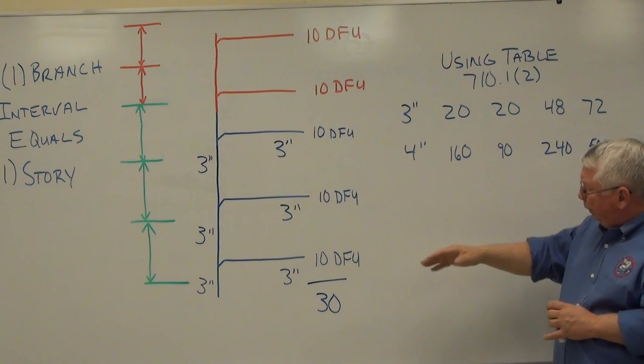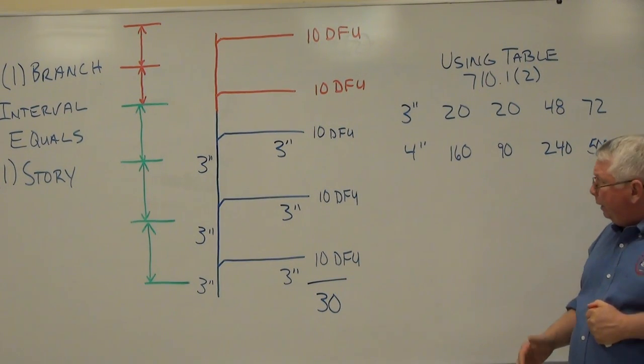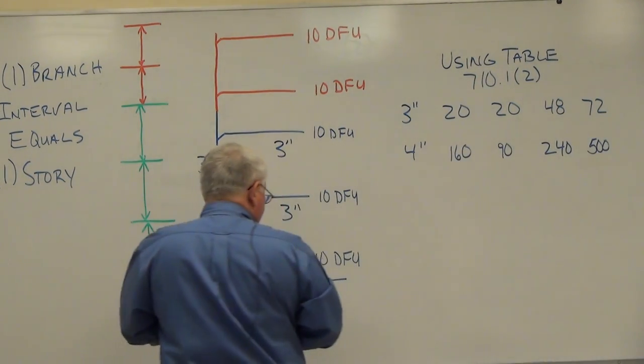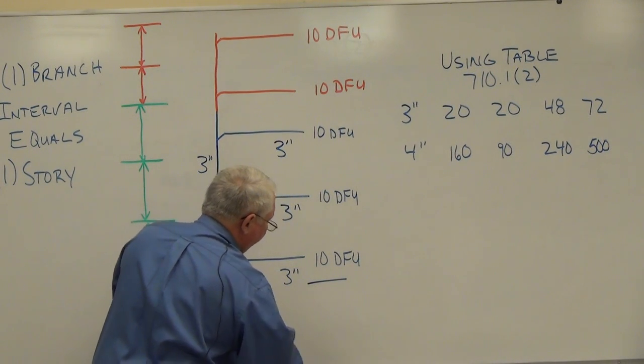If I look at the total number of drainage fixture units connected to that stack, once again I'm adding 20 DFUs to it so I have a total of 50 drainage fixture units for the stack.